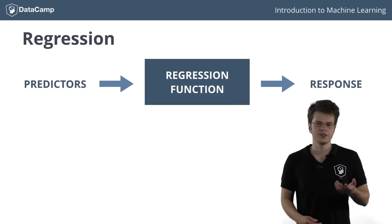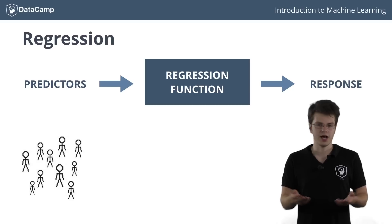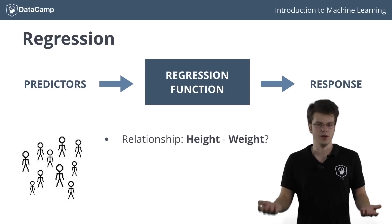Do you recall the example from the last video? There, we had a data set on the group of people's height and weight. A valid question could be, is there a relationship between the height and the weight? For example, will a change in height correlate linearly with a change in weight?